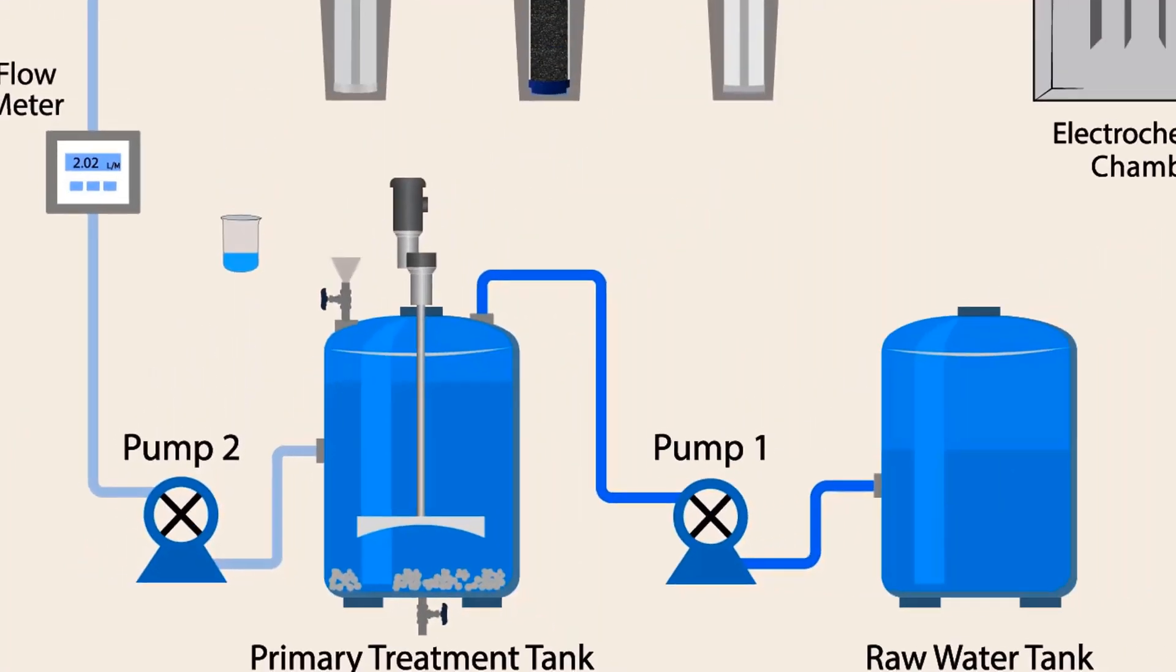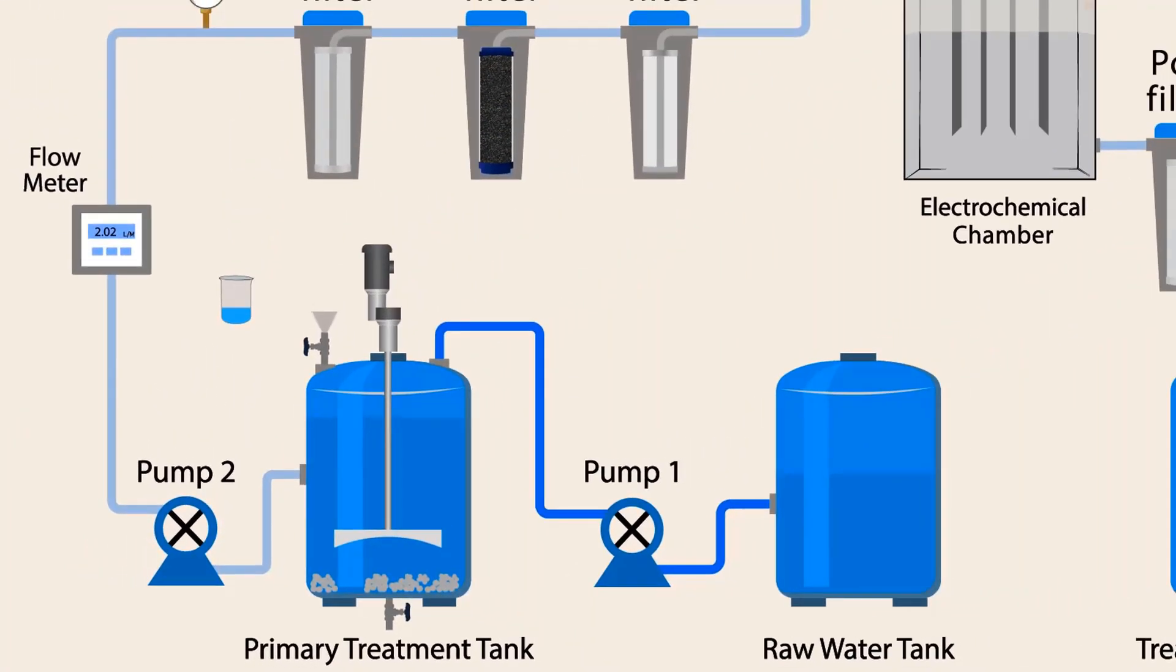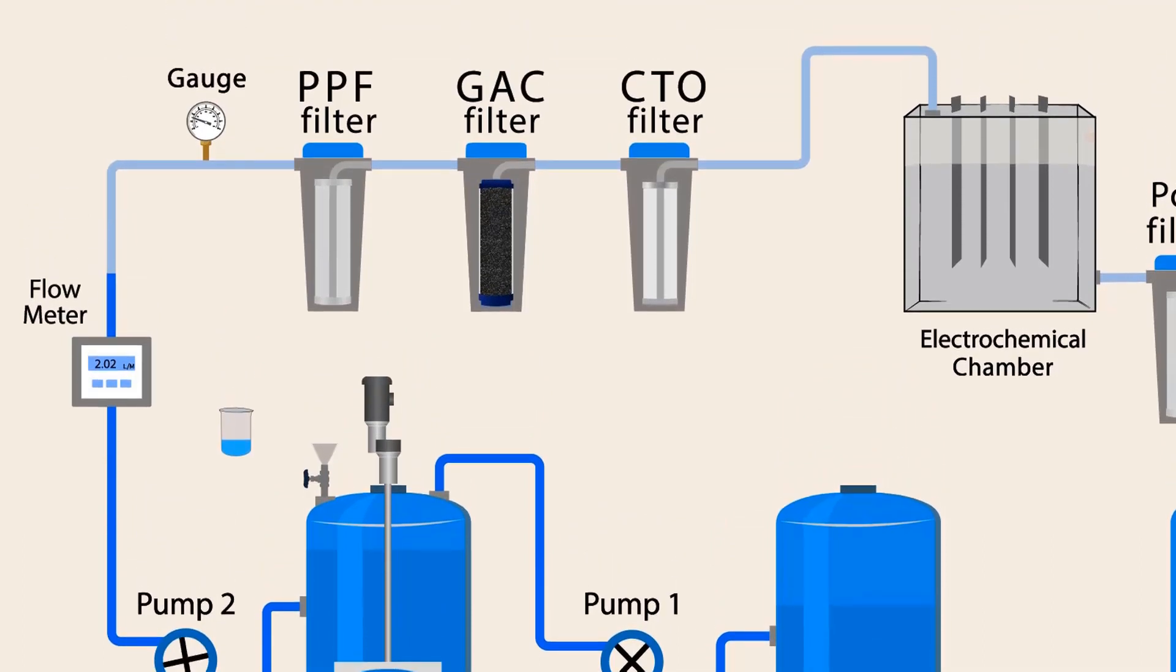Now, we will pump this water to the next stage. This water goes to the PPF filter. Flow meter shows us flow rate of water and gauge tells us pressure of water.